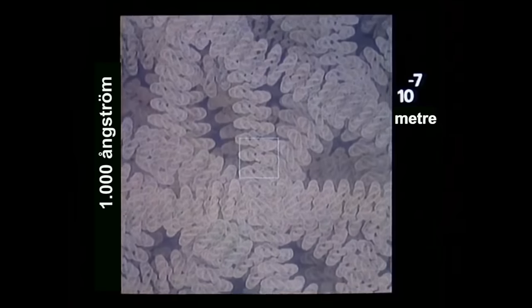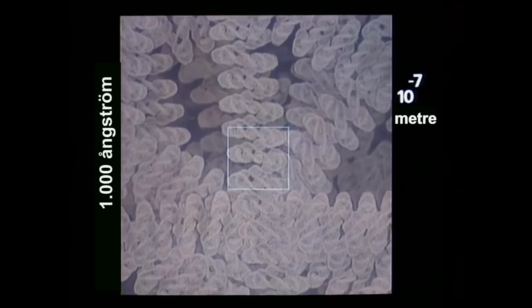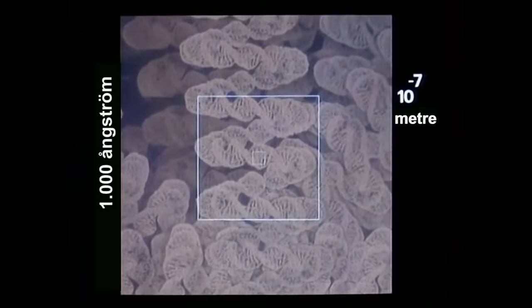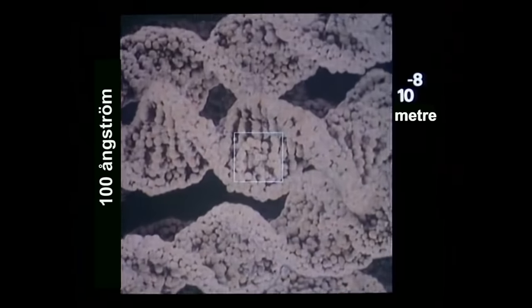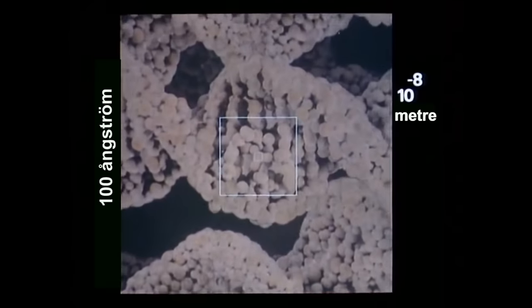Uzun sarmal bir merdivene benzeyen bu molekülün eşlenmiş tabanlarının basamakları iki kez okunur. Dört harften oluşan bu alfabede güçlü bir genetik mesaj taşınır. Atomik ölçekte şekil ve hareket arasındaki etki daha belirgin bir hal alır.